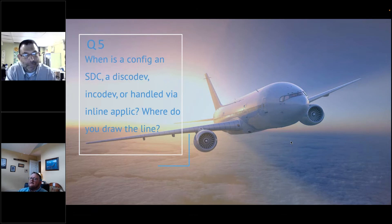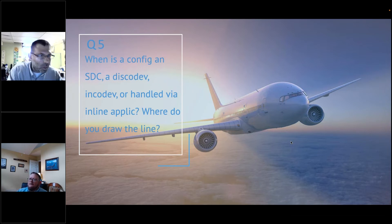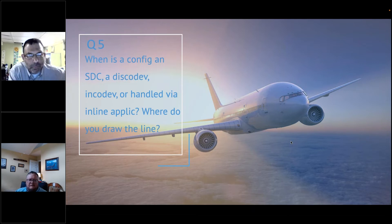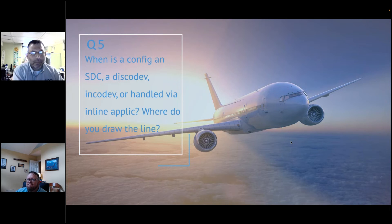Question five: when is config and SDC, discodev, encodev handled via inline applicability, and where do you draw the line? This is talking about applicability. When talking about your applicability and where you draw the line, you want to get as much functionality out of your system as possible. If you can use your attributes in these tags to separate your content by tail number, course conditions, and all the different types of applicability, that's ideal.